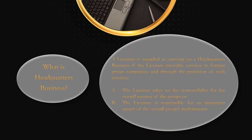What is a headquarter business, or when is a licensee considered as carrying on a headquarter business? As per the Economic Substance Regulation, a licensee is regarded as carrying on headquarter business if the licensee provides services to foreign group companies, and through the provision of such services, the licensee takes on the responsibility for the overall success of the group, or the licensee is responsible for an important aspect of the overall group's performance.